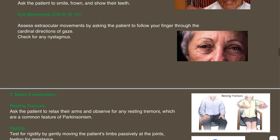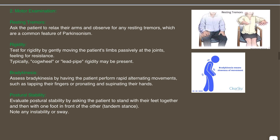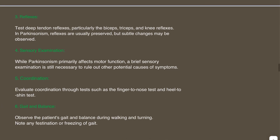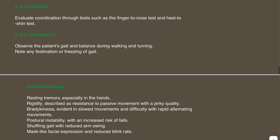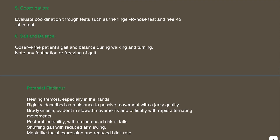Remember this is a focused examination. Once you've done the face and have some idea about the cranial nerves, do the motor examination in detail — specifically for Parkinsonism: resting tremors, rigidity, bradykinesia, postural stability, and gait. Then check reflexes — the deep tendon reflexes, particularly bicep, tricep, and knee reflexes. Although Parkinsonism primarily affects motor function, a brief sensory examination is still necessary to rule out other potential causes. Evaluate coordination through the finger-to-nose test and heel-to-shin test, and note any festination or freezing of gait.